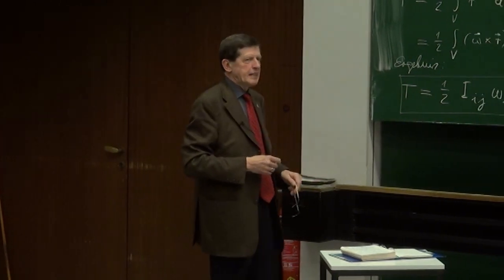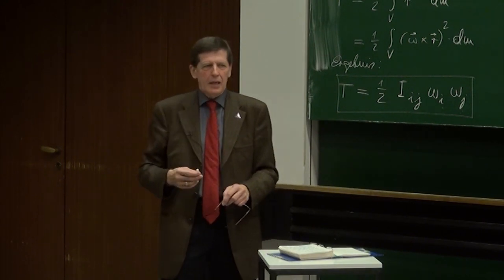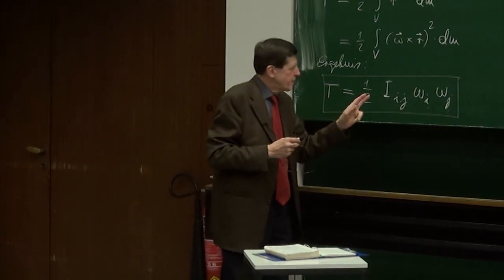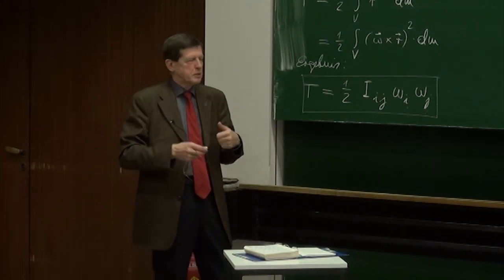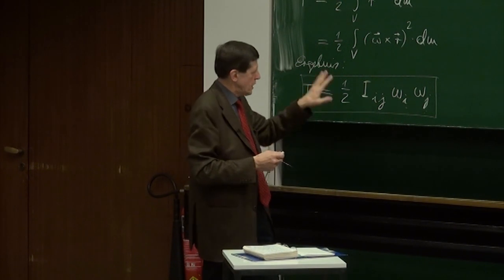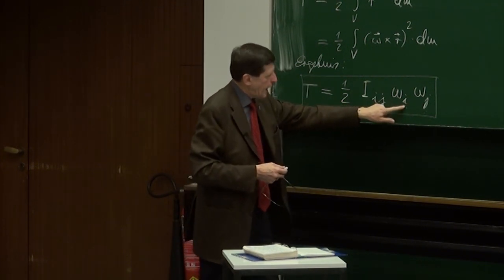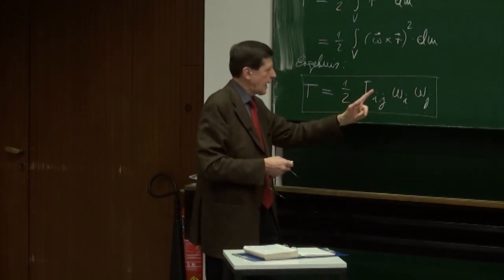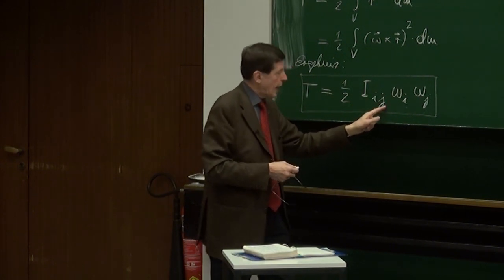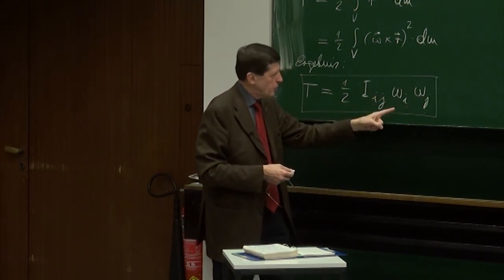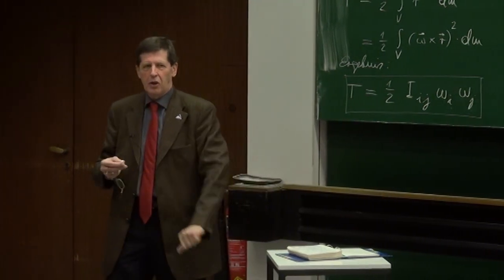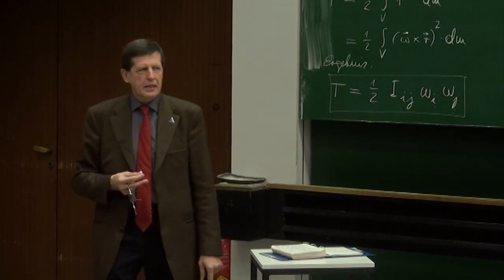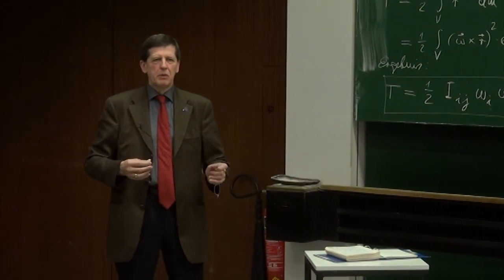Diese Doppelsumme möchte ich Ihnen kurz vorbeten. Wenn man über i und j von 1 bis 3 summiert, kriegt man also immer mit dem Faktor ½: I₁₁ Omega₁ Omega₁, dann plus I₁₂ Omega₁ Omega₂, plus I₁₃ Omega₁ Omega₃, plus I₂₁ Omega₂ Omega₁, plus I₂₂ Omega₂ Omega₂ – und so weiter, und enden tut das Ganze dann bei I₃₃ Omega₃ Omega₃. Also es sind 3 mal 3, 9 Terme, die sich in dieser kleinen Beziehung hier verstecken.